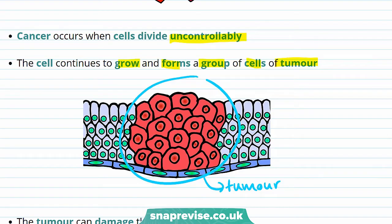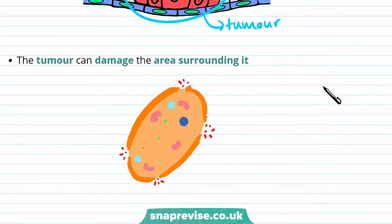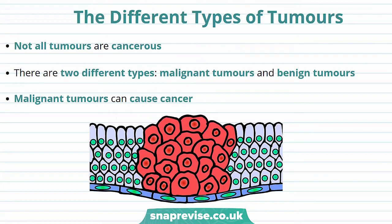You may be asking: what's the big deal with tumours? Well, tumours can cause problems because they can damage the area around them — you can see here in this diagram that the surrounding cell is damaged. If enough cells are damaged, the person could become very ill. Although this can be dangerous, there are now lots of different treatments for cancer.